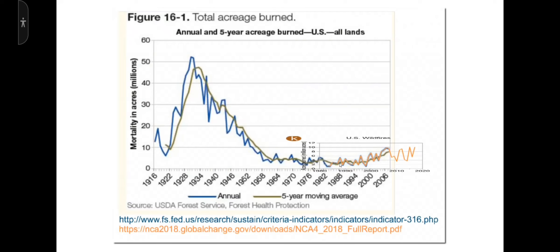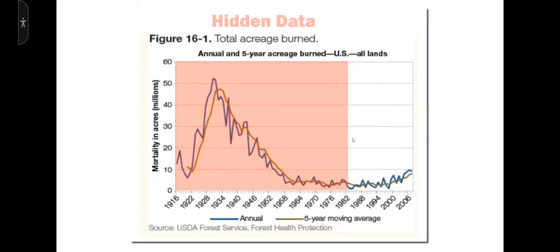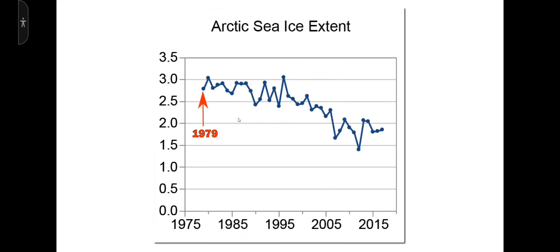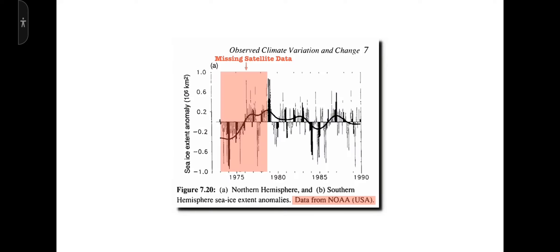You can see the breathtaking fraud which is going on here. They carefully cherry-picked one year where they could show an increasing trend in wildfires, even though US wildfires are down 80%. This graph shows in pink all the data that was hidden. Now let's look at the Arctic sea ice extent graph which starts in 1979. Starting in 1979 makes it look like sea ice extent is decreasing linearly.